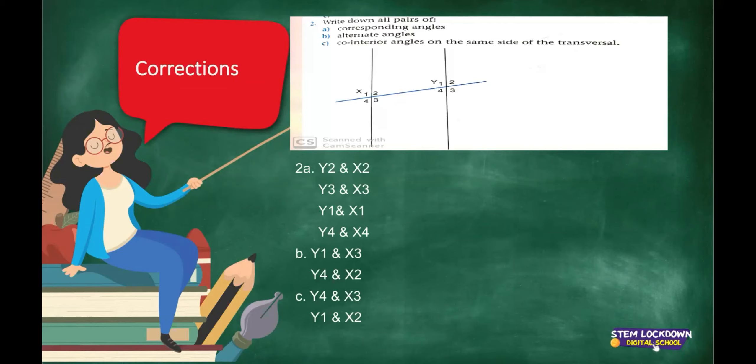So let's do our corrections. Yesterday I gave you an activity with two questions. For those who were not here yesterday, it's fine. At the end of the lesson, you'll be able to distinguish between corresponding angles, alternate angles, and co-interior angles on the same side of the transversal.